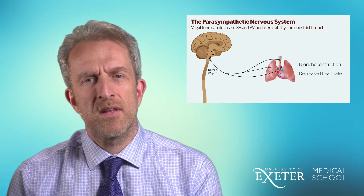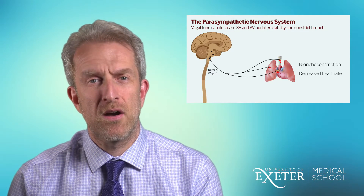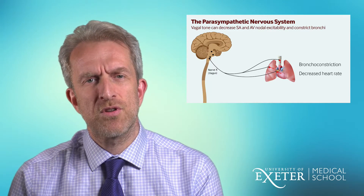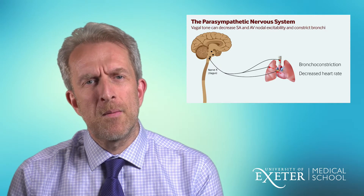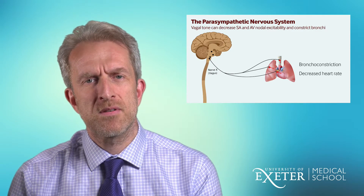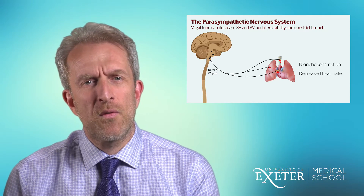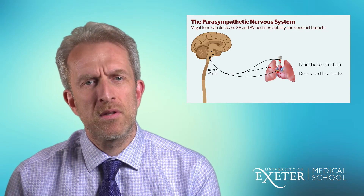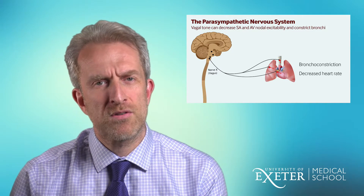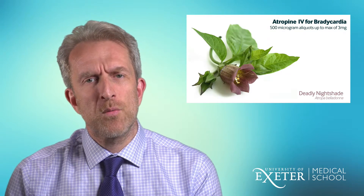The parasympathetic nervous system and the sympathetic nervous system are our key targets for managing bradycardia. Starting with the parasympathetic first, because this is the drug you will use first: the vagus nerve carries parasympathetic fibres to the heart and lungs, and when stimulated they cause a decreased heart rate and possibly bronchoconstriction.